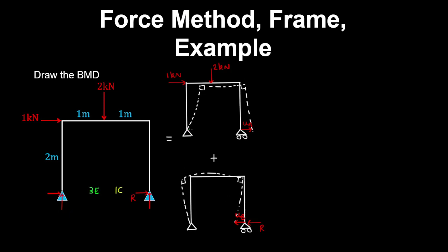Here we have a horizontal reaction at the pin, as the roller cannot resist the horizontal load, so that's equal to the external load of one kilonewton. Taking the sum of moments about the pin and roller, the vertical reaction at the pin is zero, and the vertical reaction at the roller is two kilonewtons.